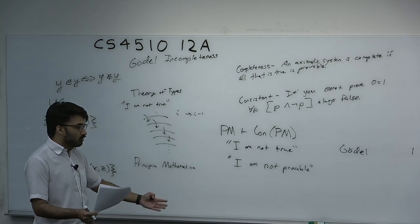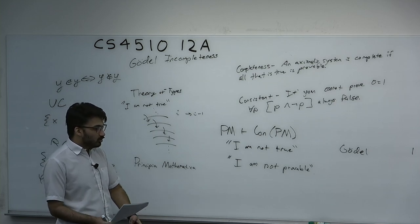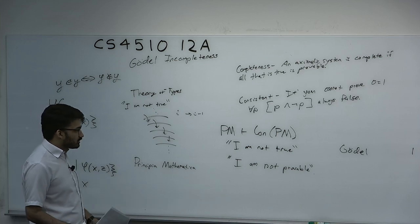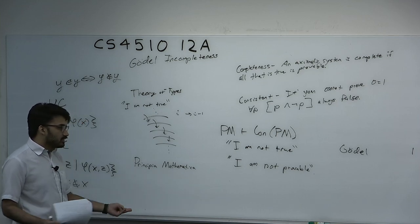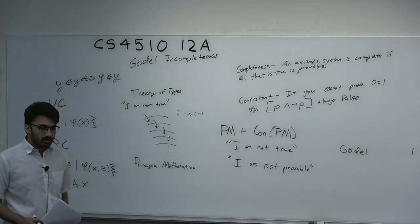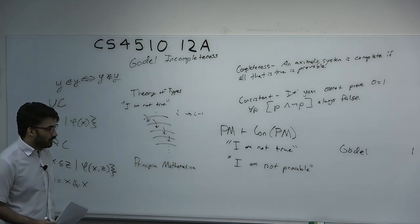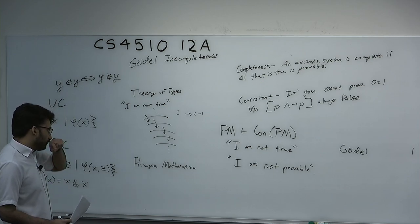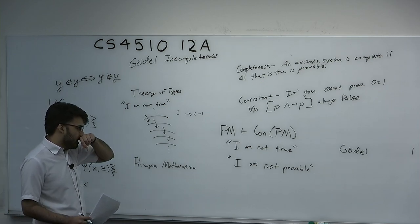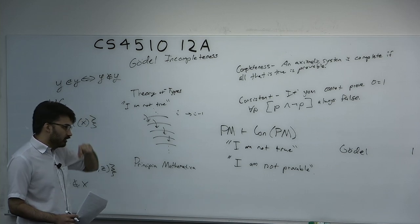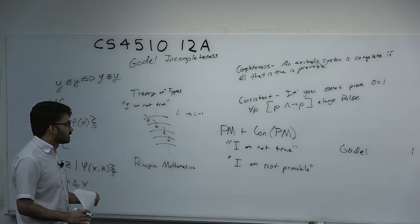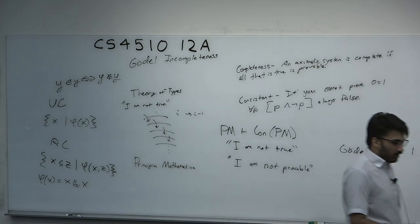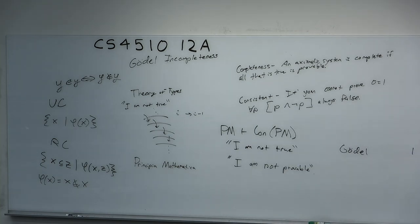Gödel basically said Russell's life's work was in vain — he was only 22. It's not nice to know you've been working towards something for 20 years and someone proves it's impossible on their first try. What you were looking to prove could not be shown.